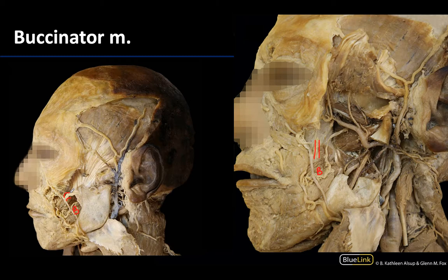So there is the buccinator. These are the muscles to locate for this session: four muscles of mastication and one muscle of facial expression that is geographically closely related. Please make sure to review on your own and reach out with any questions you may have. Thank you and have a wonderful day.